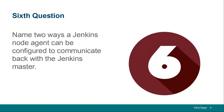Question number six: name two ways a Jenkins node agent can be configured to communicate back with the Jenkins server. One option is to go to the node machine, launch a browser, and launch the Jenkins node agent from a browser using JNLP. The other option is to use the command line — you can download the agent.jar file, run a java -jar agent.jar command, and specify the JNLP URL for the master server. Those are the two ways: launch it from a browser window, or use the command line interface.